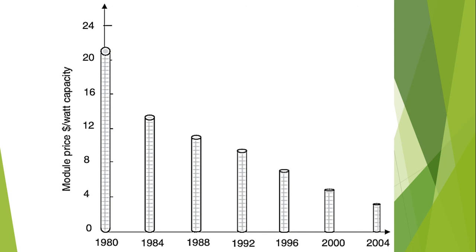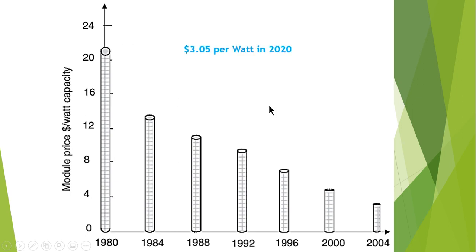This graph shows the price per watt capacity comparison of solar modules from 1980 to 2004. It can be seen that the module price per watt has been significantly reduced over this period. It is reported that the cost is around $3.05 per watt in the year 2020.